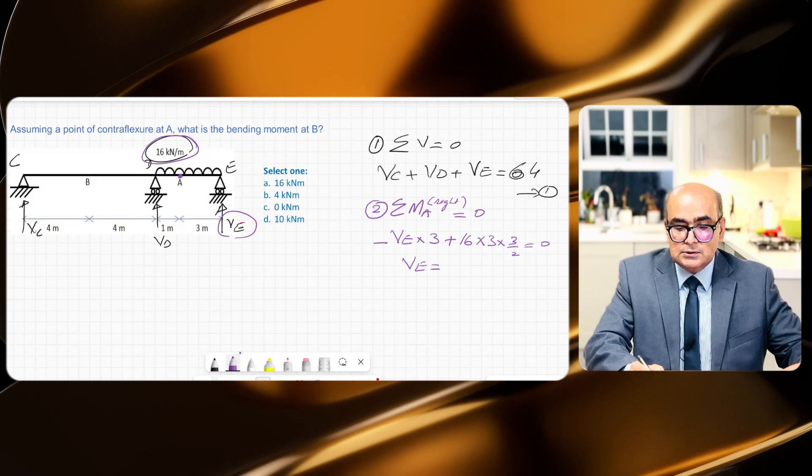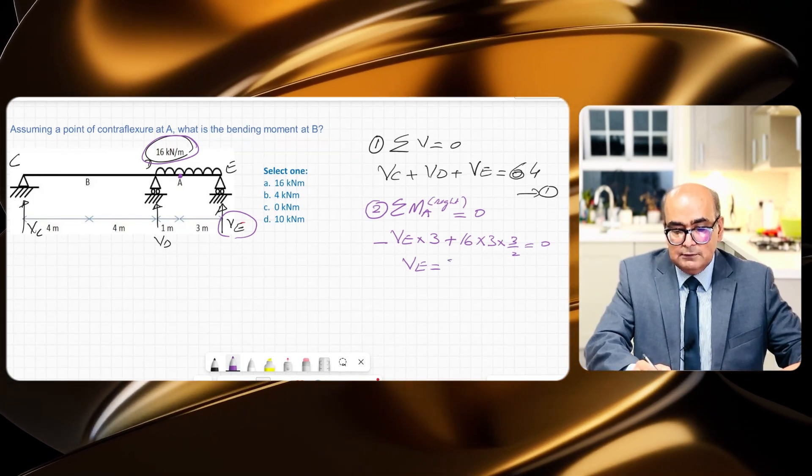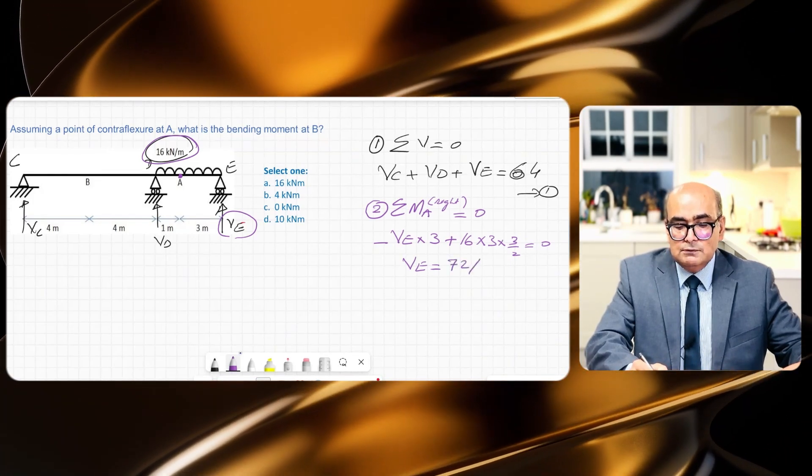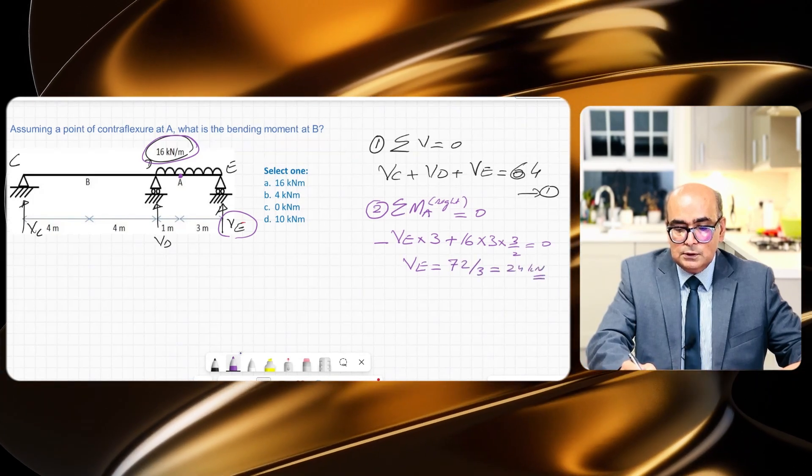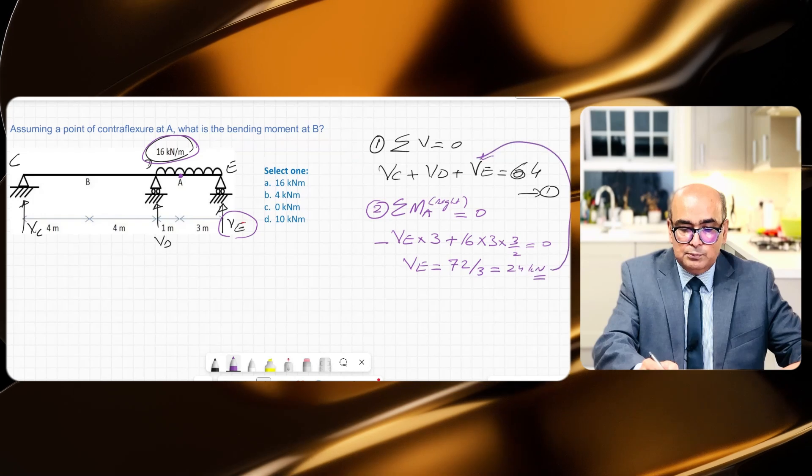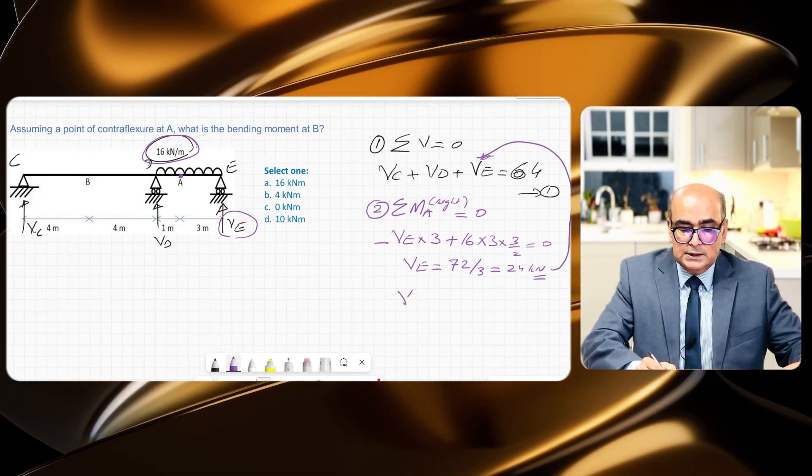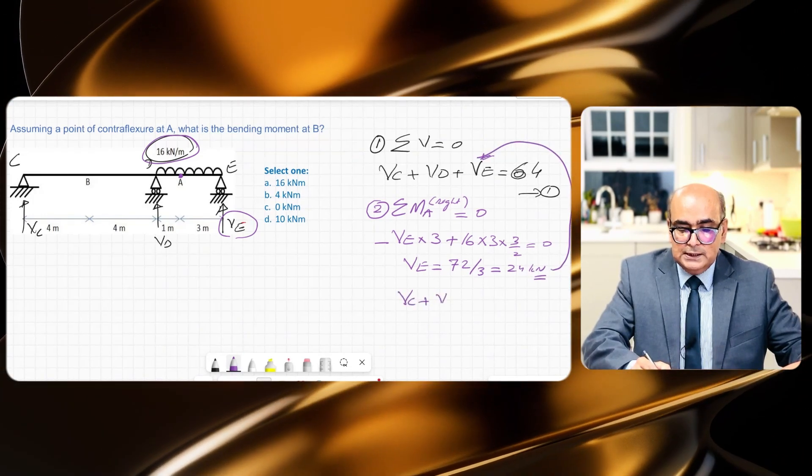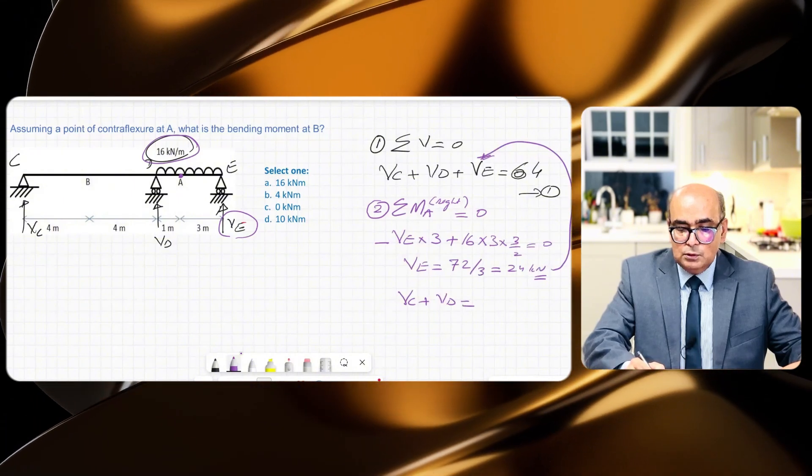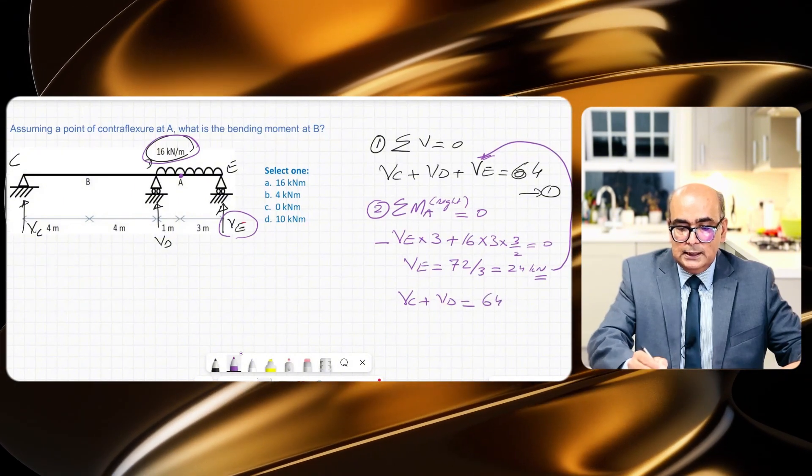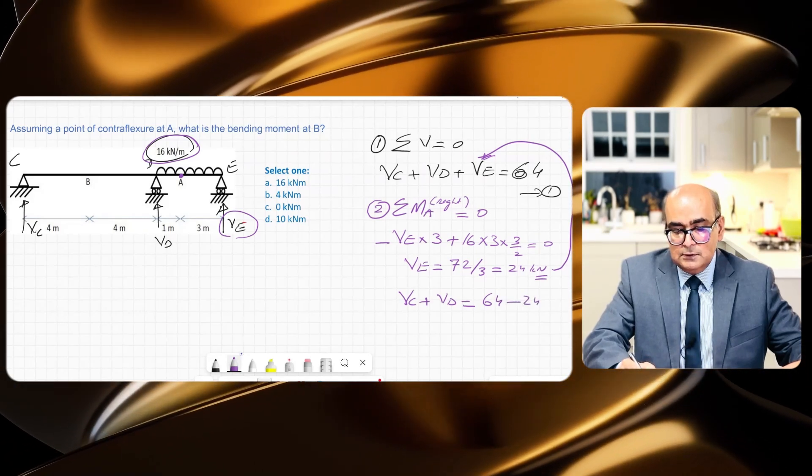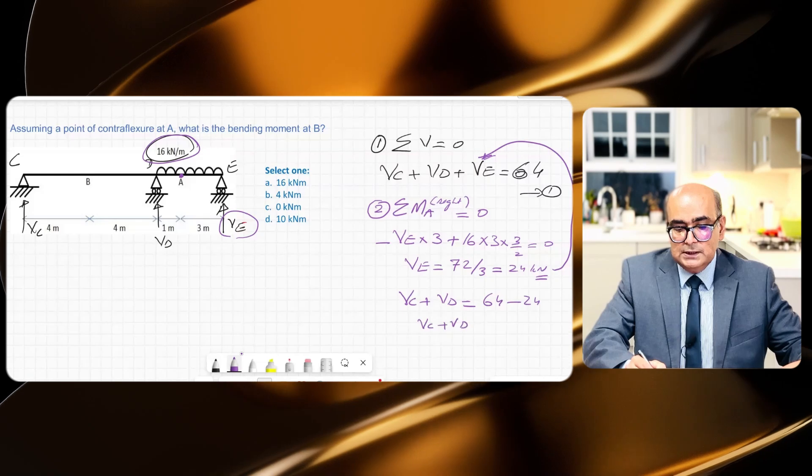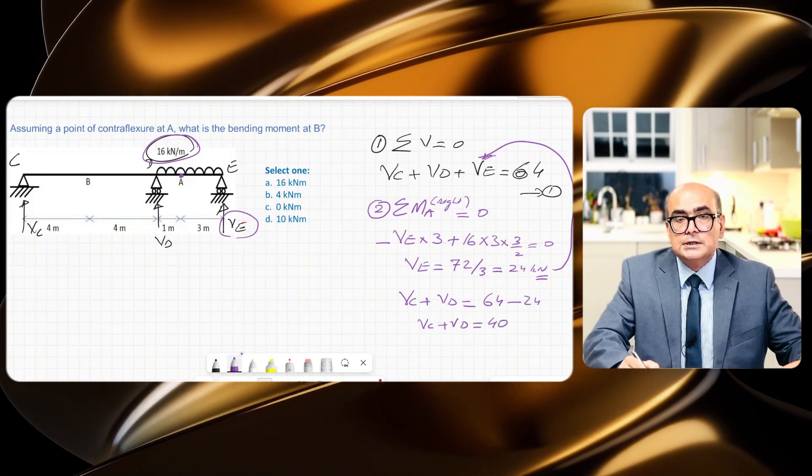So this will give me VE equal to 16 times 3 times 1.5 will give me 72 divided by 3. So this is equal to 24 kN. So I can put this back over here: VC + VD is equal to 64. And then if I bring VE on the other side it will be -24. So VC + VD is equal to 40 kN, and I call this equation as equation 2.